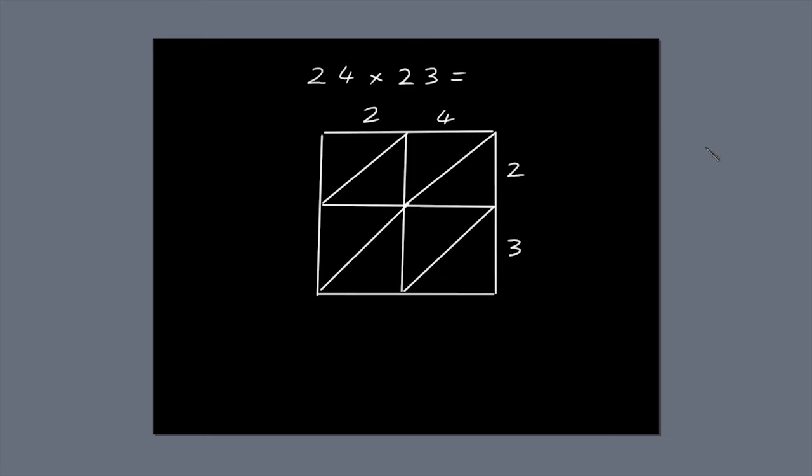Next, multiply and fill in the blanks. 4 times 2 is 8. 4 times 3 is 12. 2 times 2 is 4. 2 times 3 is 6.